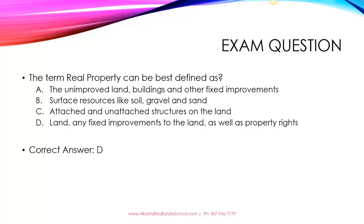The correct answer is D. The term real property is land, any fixed improvements to the land — so the buildings that are on the land or the fence — as well as the property rights, which are a bundle of rights. Option A describes real estate, and surface resources fall under the definition of land.